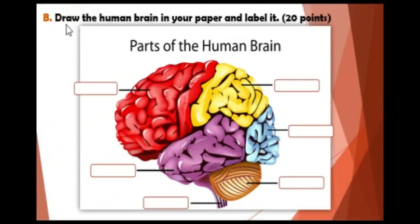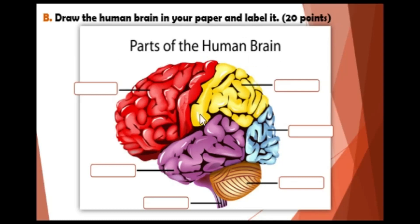This time, you have to draw the human brain on your paper and label it. You will earn 20 points. Draw and then label each part of the brain.